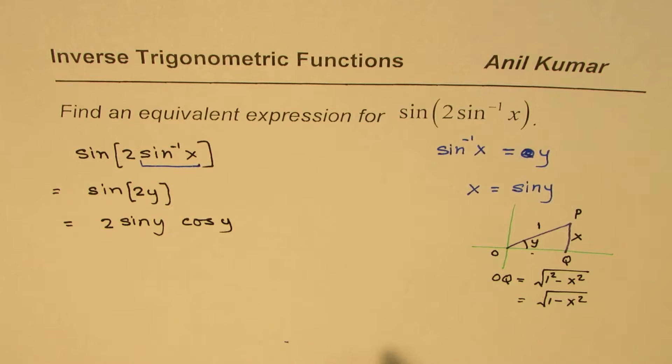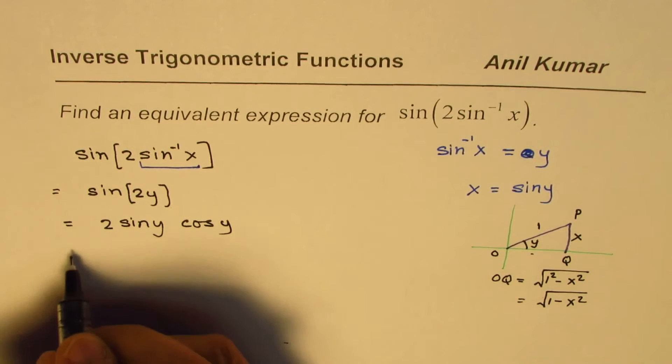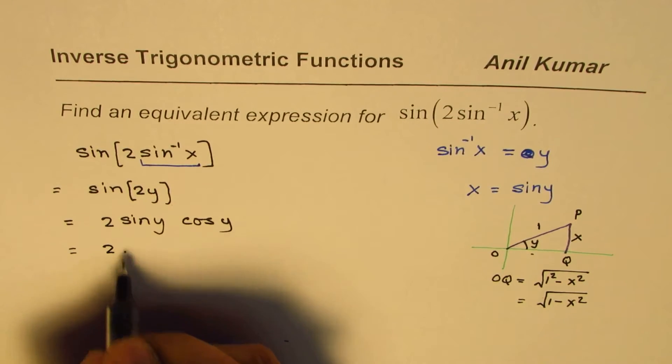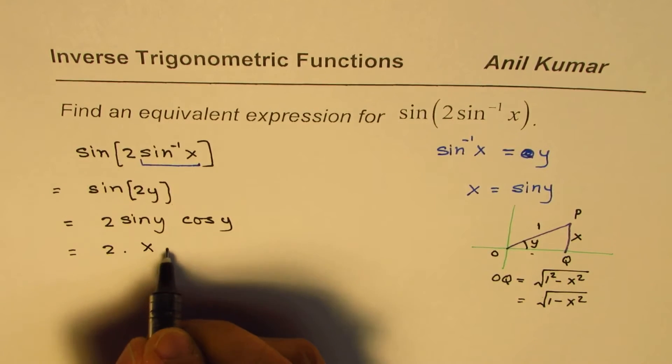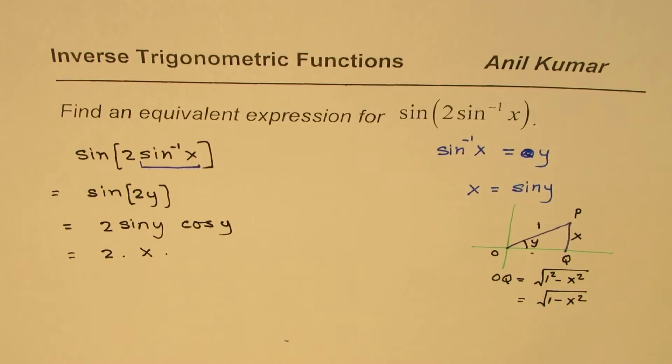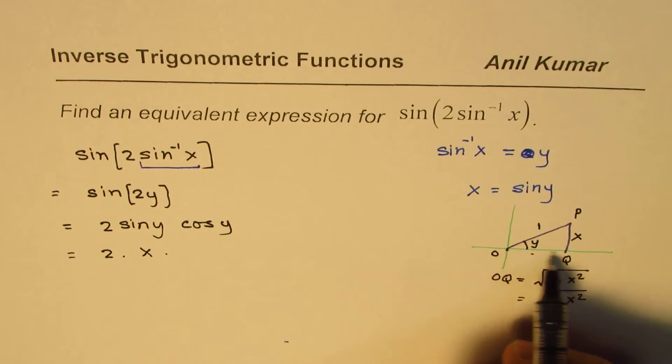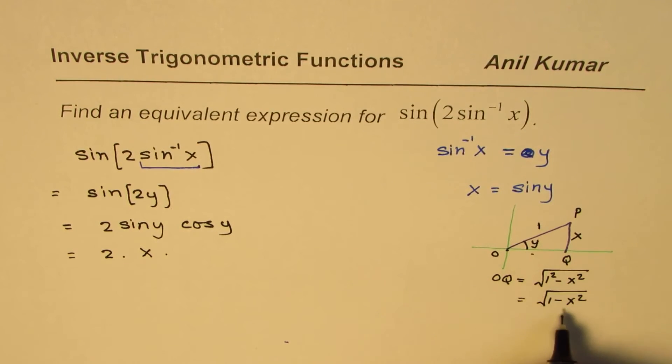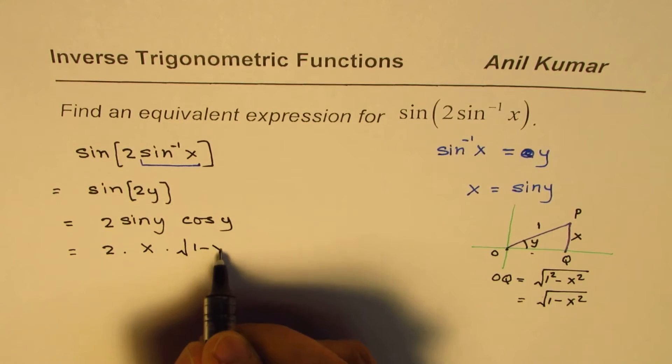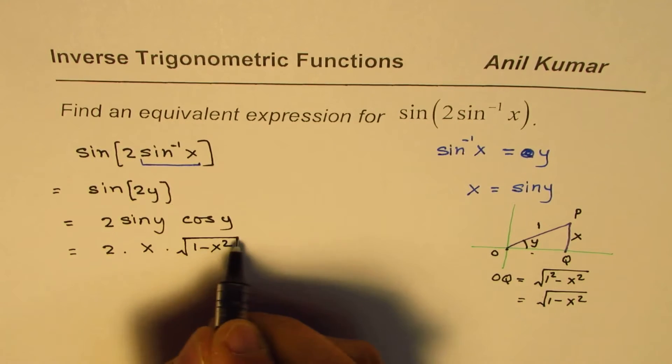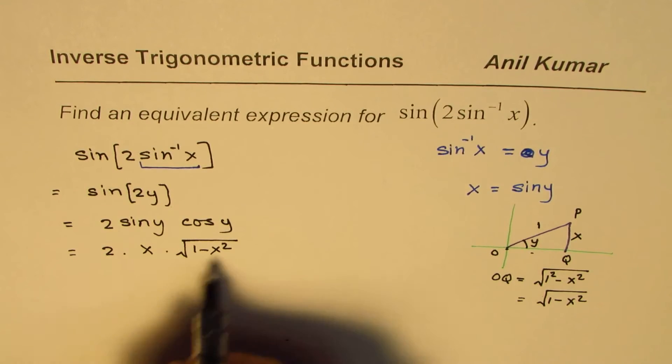Now, what is sine y? If you look at this triangle, you can see sine y is x, x over 1. How about cos y? Cos y is OQ over OP. OQ is square root of 1 minus x square over 1. So this is what it is.